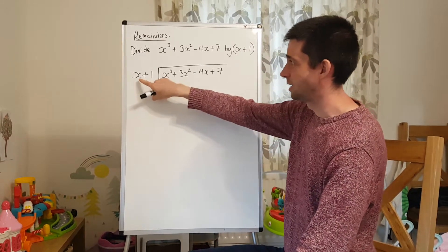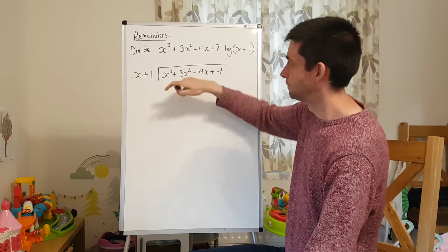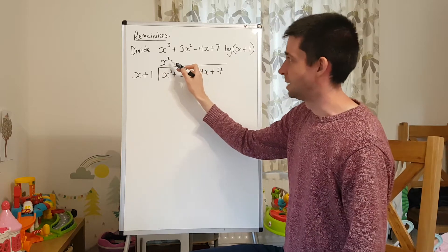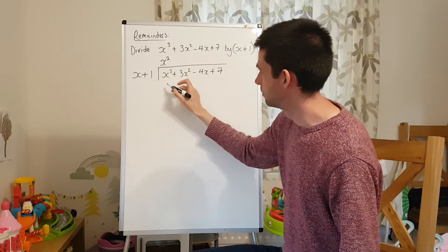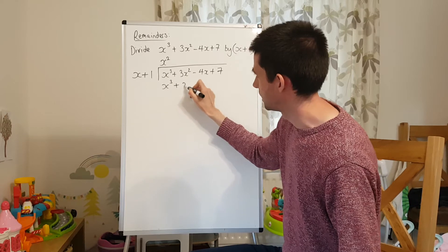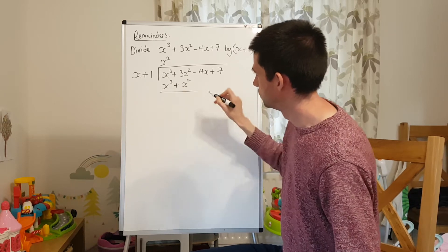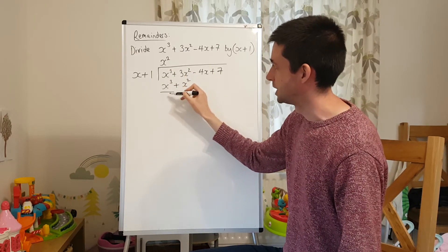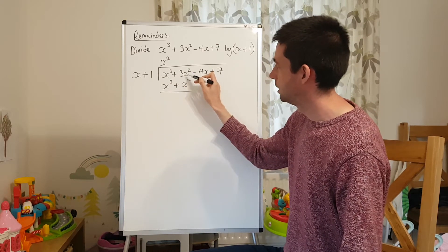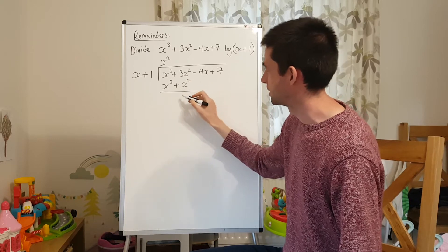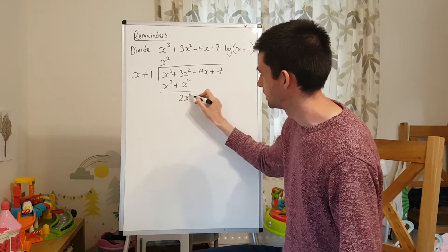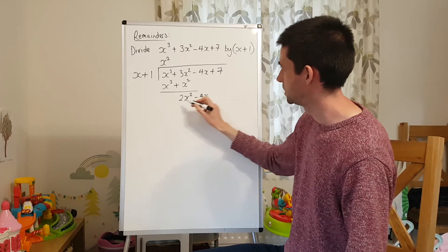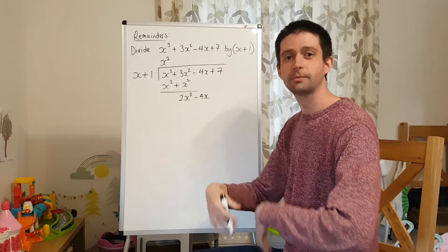We start off by saying how many x's go into x cubed. And the answer is x squared. We then multiply back, giving you x cubed plus x squared. Put the line in and subtract to find the remainder. So x cubed take away x cubed is nothing. 3x squared take away x squared is 2x squared. Bring down the minus 4x so that I've got two terms to divide into. And repeat.